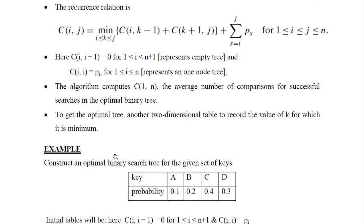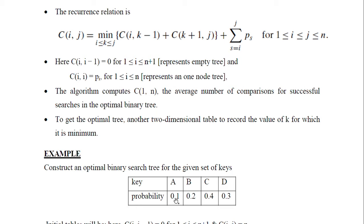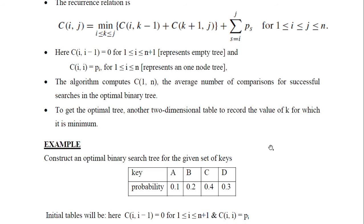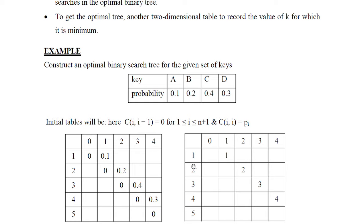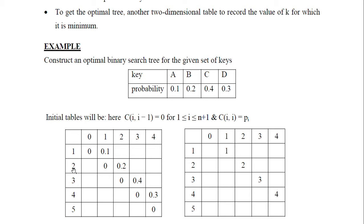Here there are four keys. The probabilities of occurrence of these keys are given. We are going to construct an optimal binary search tree using the dynamic programming approach. Initially the table has rows and columns 1 through 4 (and 5 for boundary). The initial condition C(i, i-1) = 0 fills: C(1,0)=0, C(2,1)=0, C(3,2)=0, and so on. C(i,i) = probability of occurrence: C(1,1)=0.1, C(2,2)=0.2, C(3,3)=0.4, C(4,4)=0.3. The root table is filled: for a single-node tree the root equals itself, so C(1,1)=1, C(2,2)=2, C(3,3)=3, C(4,4)=4.